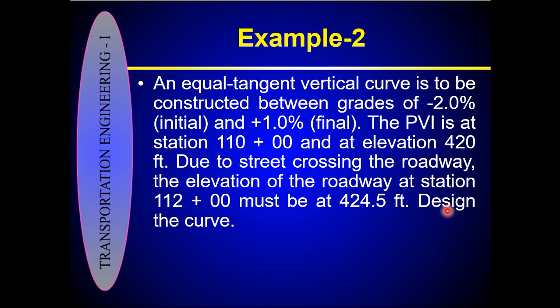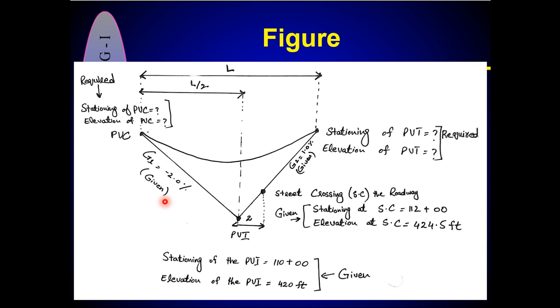Designing the curve means you have to calculate all the stations and elevations of the PVC and PVT, plus you have to calculate the required length of the curve to ensure that station 1112 is at 424.5 feet. As you can see in the figure, G1 and G2 are given. The stationing and elevation of the PVI are given, but the PVC stationing and elevation are not given. You have to calculate the stationing and elevation of the PVT and the required curve length.